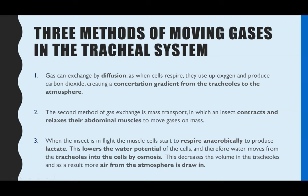The third method involves pressure changes. When insects are flying, the muscle cells respire aerobically at first, but very quickly switch to anaerobic respiration as they run out of oxygen, producing lactate or lactic acid. This lowers the water potential of the cells, causing water to move from the tracheals into the cells by osmosis. As liquid leaves the tracheals, it creates a lower pressure in the tracheals compared to the atmosphere, and that lower pressure forces more air in from the atmosphere, drawing air into the tracheal system.